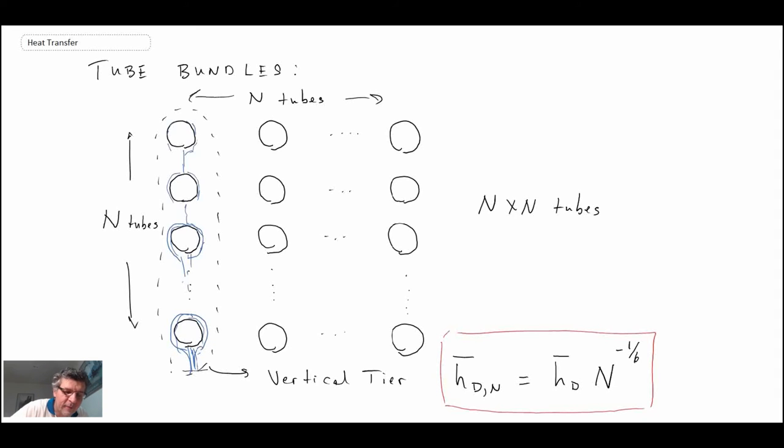Consequently, we would expect that the amount of convective heat transfer is going to be reduced as you get a larger and larger film forming around the tubes. And so all of the tubes here would have this taking place. And they would all then have a larger film developing around them.